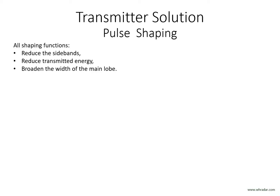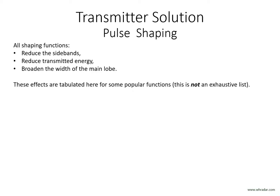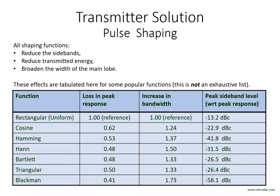The reduced sidebands, particularly in the neighbouring channels which may be offset by several MHz, outweighs the small disadvantages of the reduced energy and broadened main lobe. The loss in the peak response and increases in main lobe and peak sidelobe levels are tabulated here for many of the popular shaping functions. This is not an exhaustive list, but serves as a quick comparison. The Hamming and Hann functions are popular as they provide effective control of the sidebands without compromising the transmitted energy or main lobe width too badly.